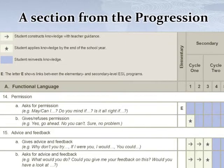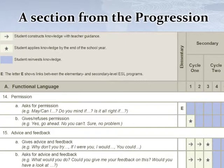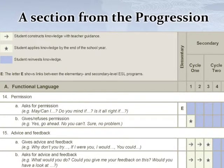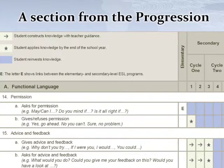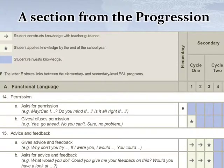Let's take a look at another example: 15A — gives advice and feedback. Students learn how to give advice and feedback throughout secondary one and two. They should be able to apply this knowledge at the end of secondary three, where we have a star, and then reinvest this knowledge in secondary four and five.